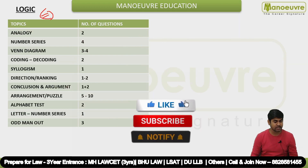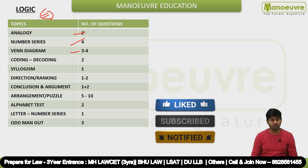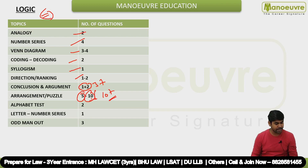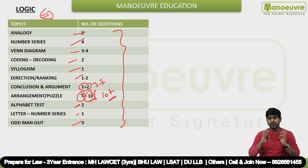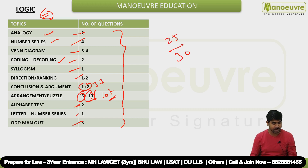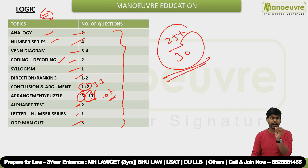Next is logical reasoning. Analogy two questions, number series four questions, Venn diagram three to four questions, coding-decoding two questions, syllogism one question, direction and ranking one to two questions in some slots, conclusion and argument three plus questions, arrangement puzzle - in some slots one set, in some slots two sets, roughly ten plus questions. Alphabet test two questions, letter and number series combination one question, odd man out three questions. Overall logical reasoning section I would say easy to moderate - scoring section. All the topics I had highlighted like analogy, number series, coding-decoding - those questions came traditionally. Those who followed instructions are in a win-win situation. Easily 25 plus out of 30 is possible; 23-24 is also a good score.